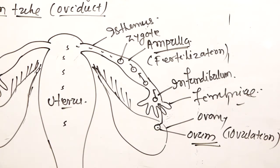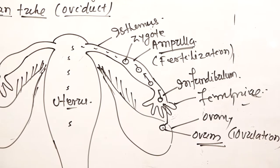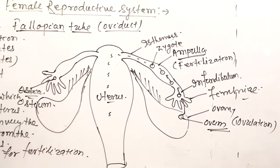To summarize: the fallopian tube is very close to the ovary, a long tubular structure near about 12 cm in length, called the fallopian tube or oviduct. The oviduct consists of three parts: infundibulum, ampulla, and isthmus.